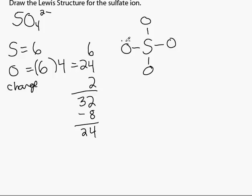Complete the octet on each of the outer atoms by giving them 6 additional electrons. There are 4 oxygen atoms. 6 times 4 is 24. This uses up all remaining valence electrons.